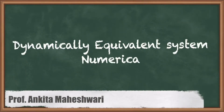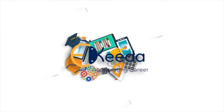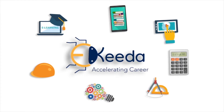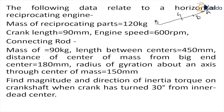In this video we'll discuss a numerical on a dynamically equivalent system. The question gives data for a horizontal reciprocating engine where the mass of the reciprocating parts at the piston is 0.20 kilogram, and the crank length r is 90 mm.